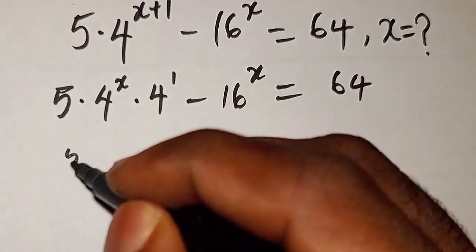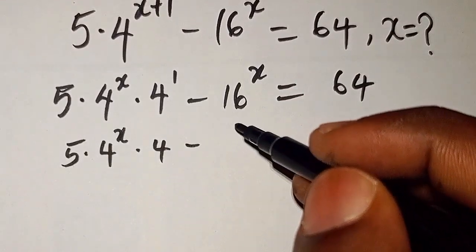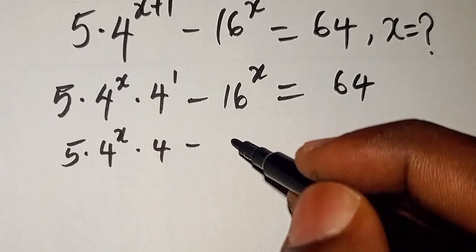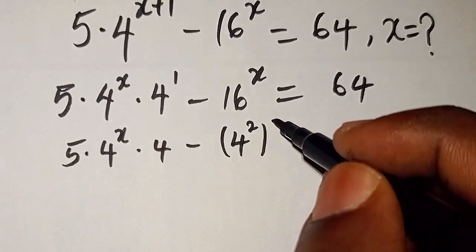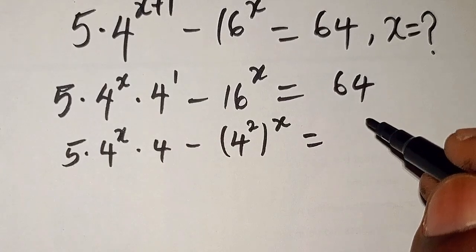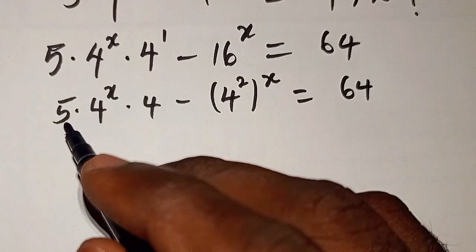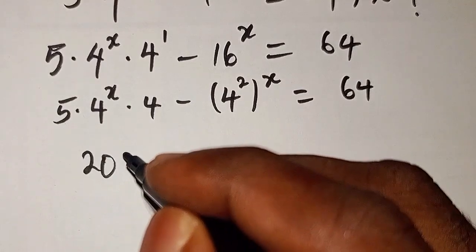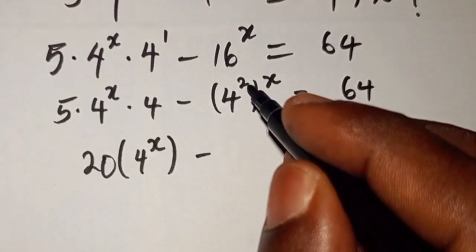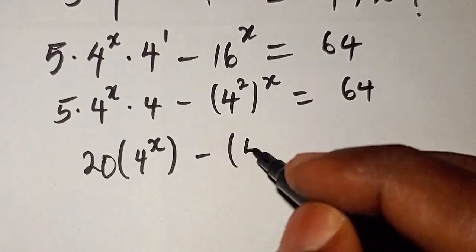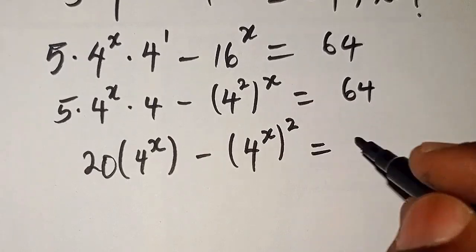So we have 5 times 4 to the power of x, dot 4 to the power of 1, minus — I can write 16 in the form of 4, that is 4 to the power of 2, then we have x equals — we have 64. You can see this is multiplication: 5 times 4, that is going to be 20. Using parentheses: 4 to the power of x, minus — here x, I can interchange this, 4 to the power of 2x — then I put the 2 outside — equals 64.